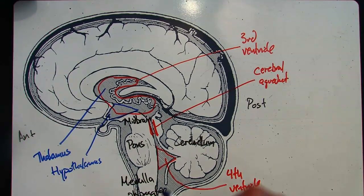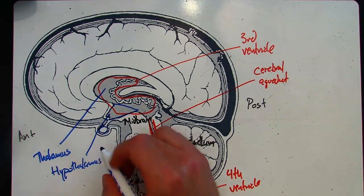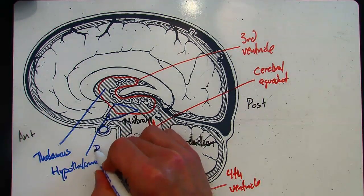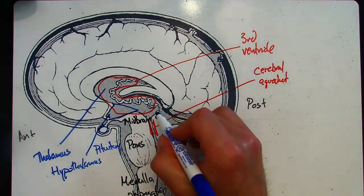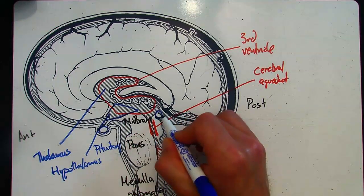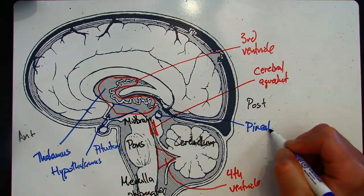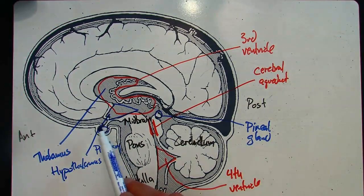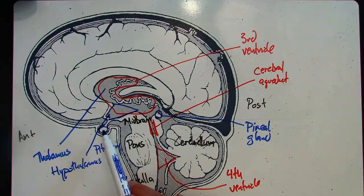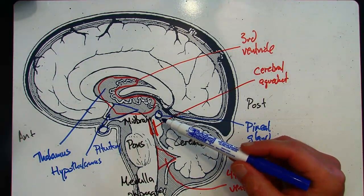And then you have a couple of glands. So this gland that's right here, this gland is the pituitary. This gland that's right here, that's on the posterior side, this is the pineal gland. So the pituitary is going to make a whole host of endocrine secretions. The pineal gland is going to be secreting melatonin.